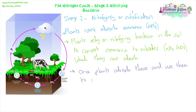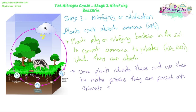Plants absorb nitrates and combine them with the glucose and sugars they make from photosynthesis to make amino acids. Those proteins in plants get broken down and digested by animals, who absorb the amino acids and use them to build their own proteins. If they're eaten by another animal, those amino acids are absorbed again, and so that's how proteins and nitrogen get into the food chain.